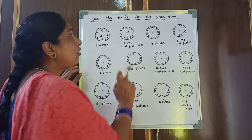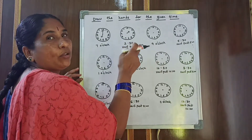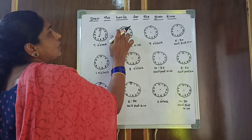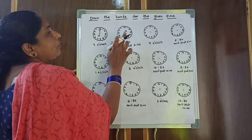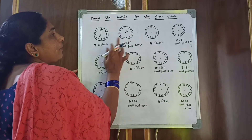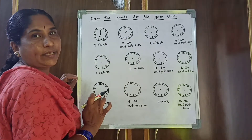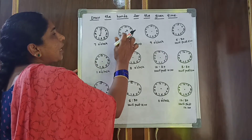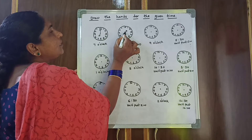The minute positions follow the 5 times table: 5, 10, 15, 20, 25, 30. So 30 means half past — the long hand must come near 6. So draw the long hand pointing to 6.